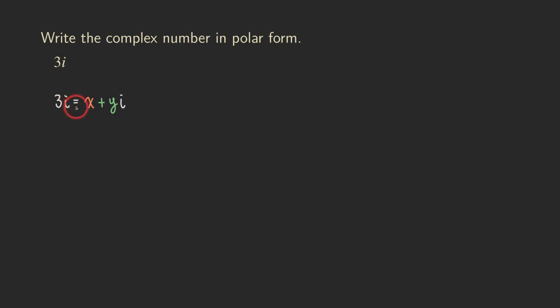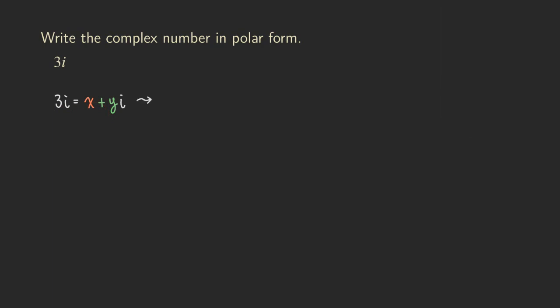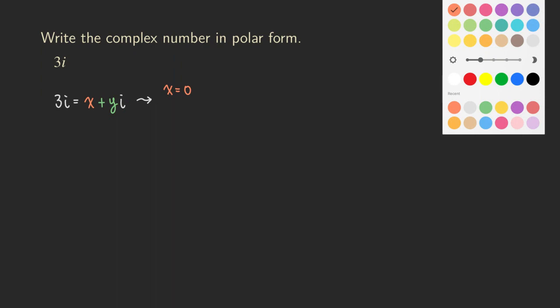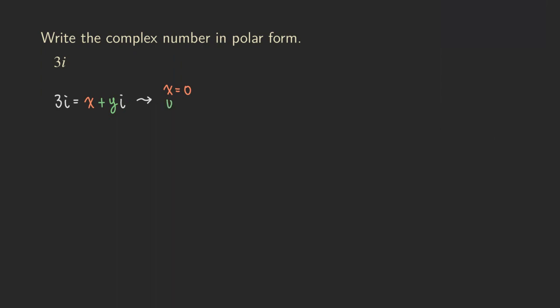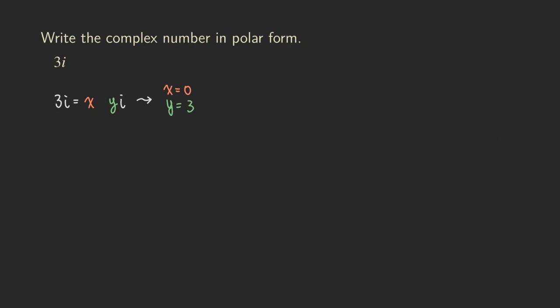And so just by comparing, then you can see what x is equal to, what y is equal to, so that will be really easy to figure out. So you can see that x is actually equal to 0, right? Because the real part is 0. And then what about the y? The y is going to be 3. So we have x equals 0 and y equals 3.